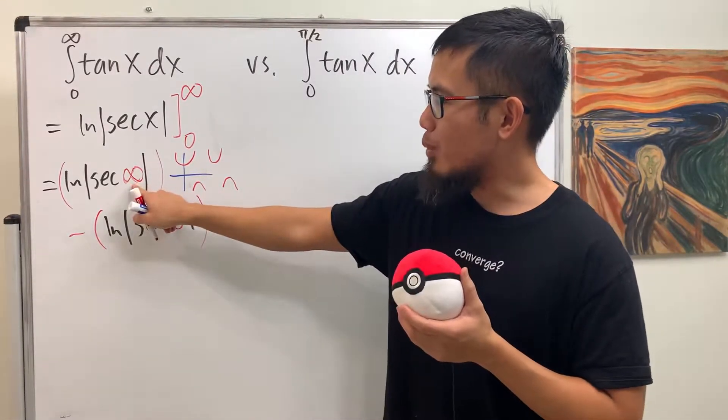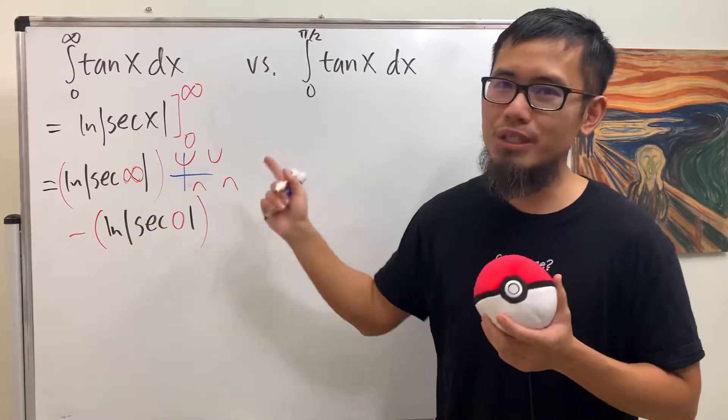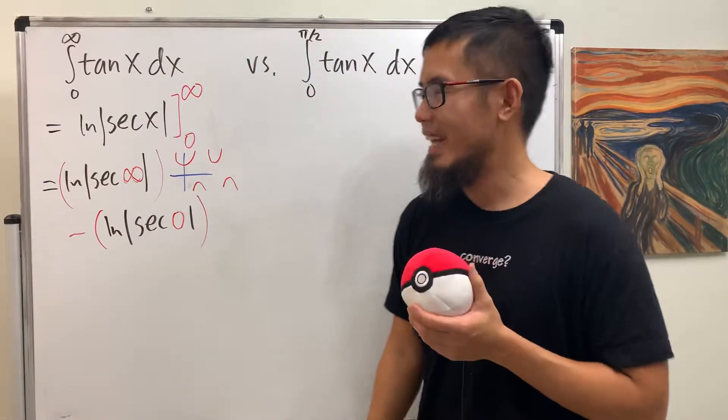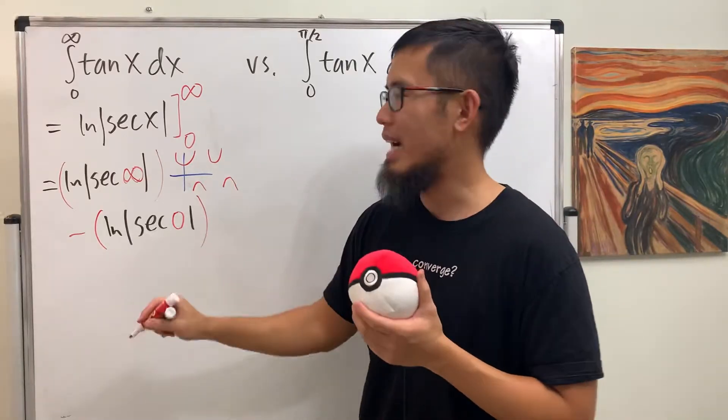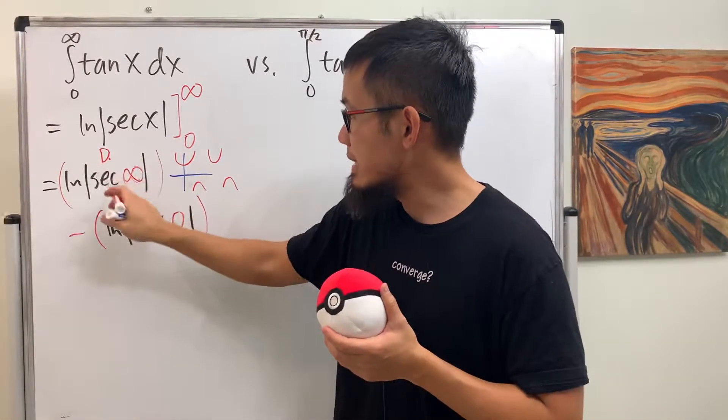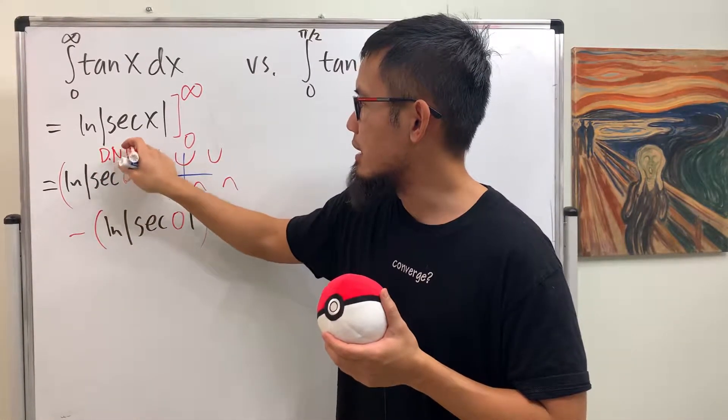And when x is approaching infinity, this is behaving really, really wildly. In other words, there's actually no limit for that. So this isn't infinity.